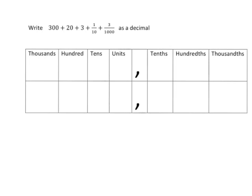So we look at what we have and we note we've got no thousands, we've got three hundreds, we've got two tens, we've got three units, then comes our decimal point, we've got one tenth, we've got no hundredths and we have got three thousandths.